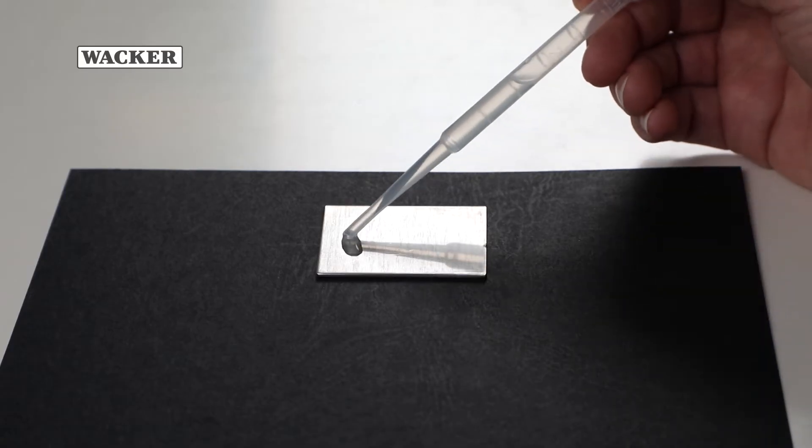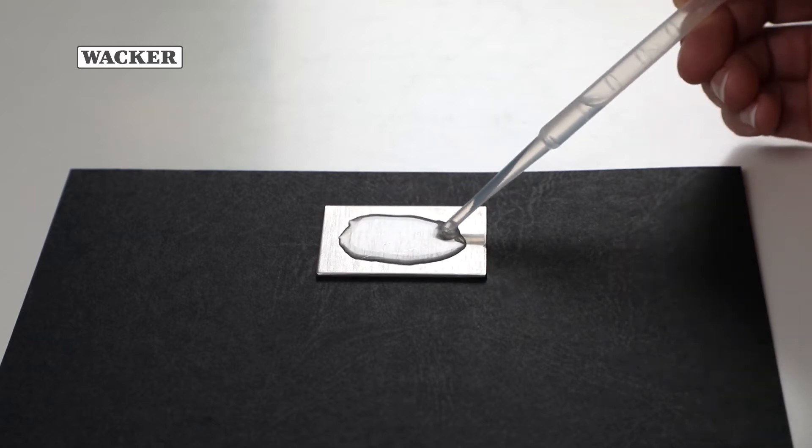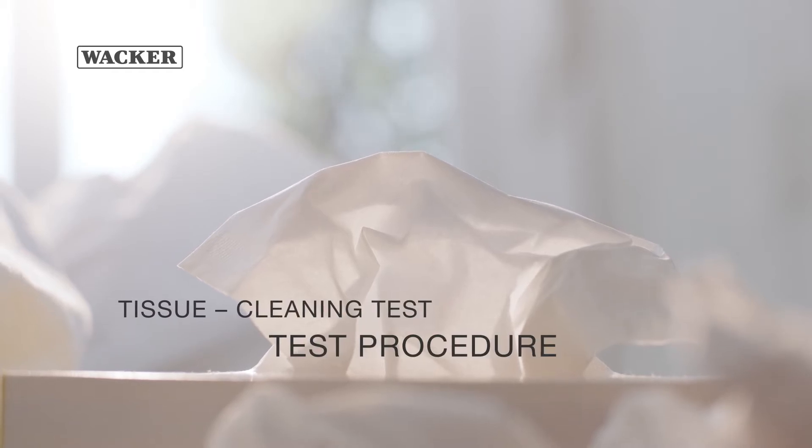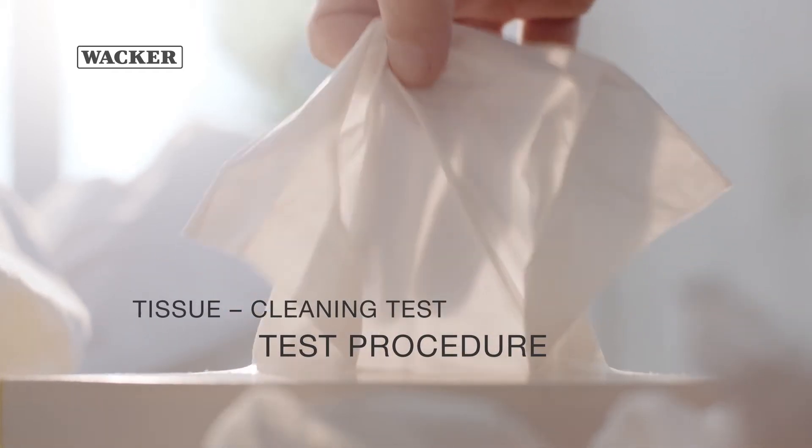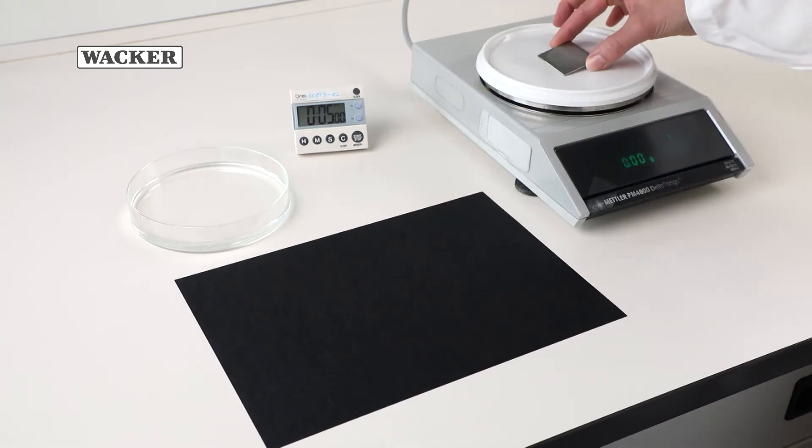Wet a small stainless steel plate with LeoSeal TS lotion and dry to a constant mass at room temperature. Record the weight once the product has dried completely.